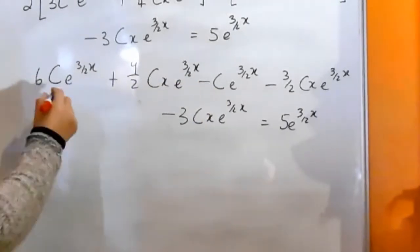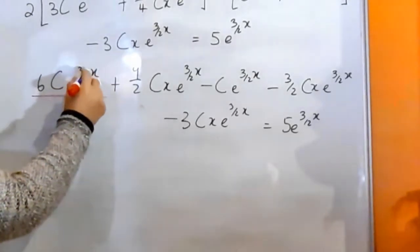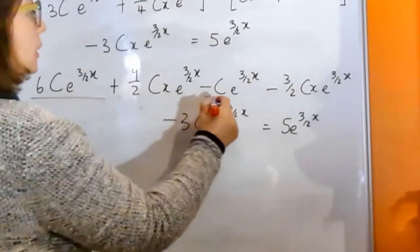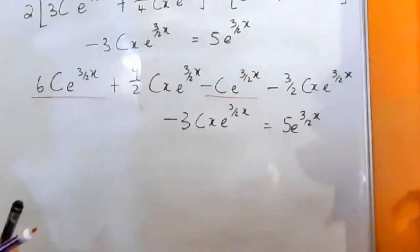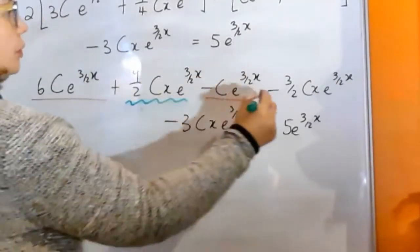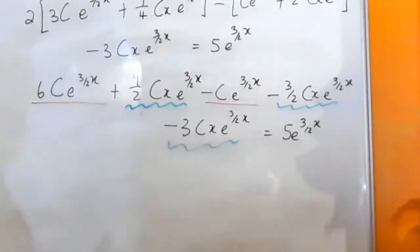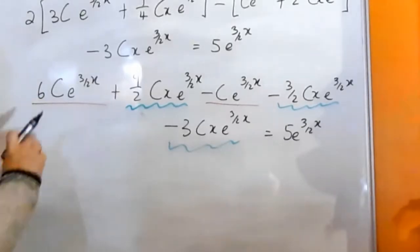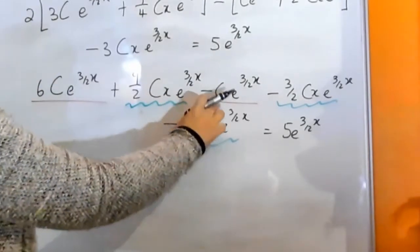So our like terms here are going to be all of the ones with just e to the 3 over 2x. So it's that one, that one, those are like, and then we've got this one, this one, and this one. Okay, so we'll have 6c minus c, so that's 5c.